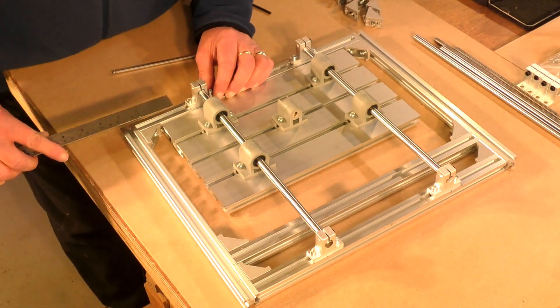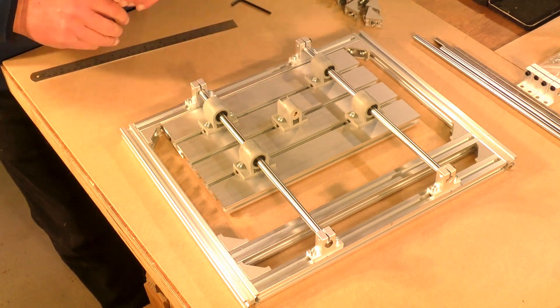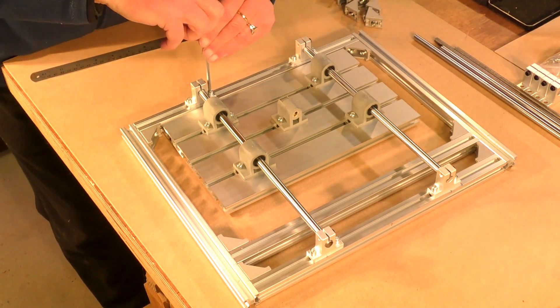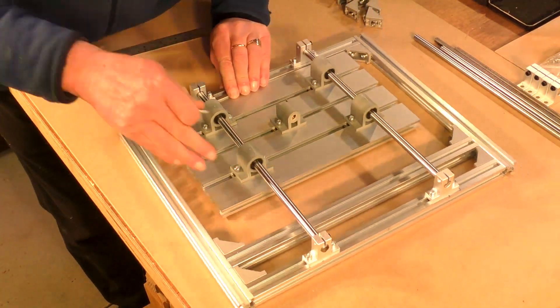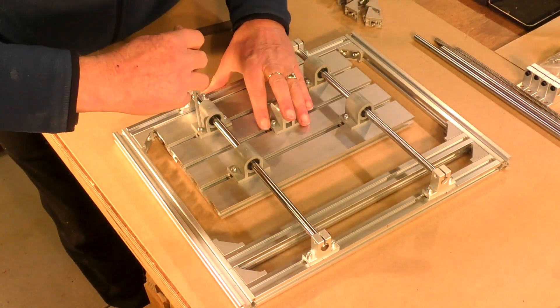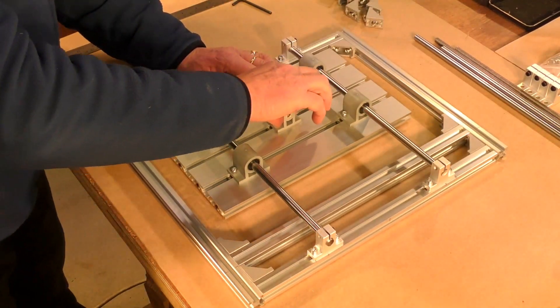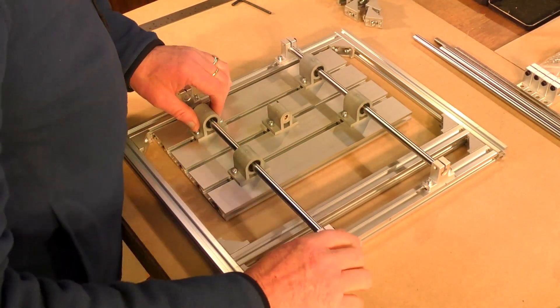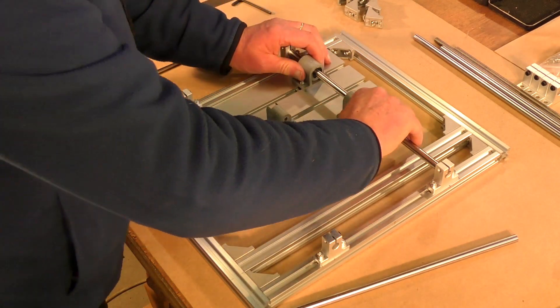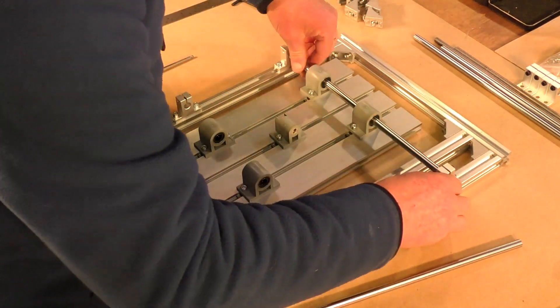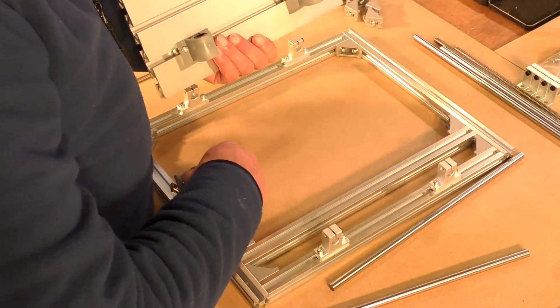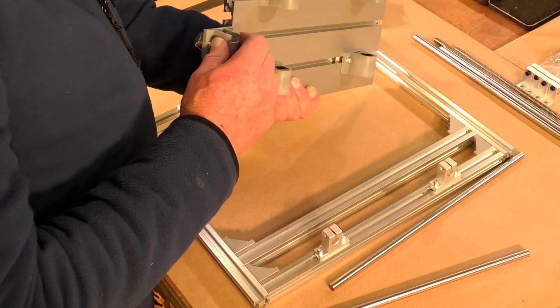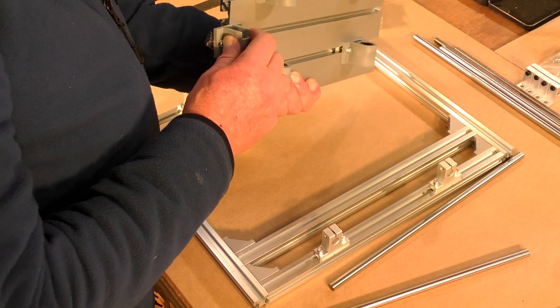And it always pays to double check your measurements. So then you just slide the rails back out, and turn it up and that was a little bit too loose and of course it fell out when I turned it around.